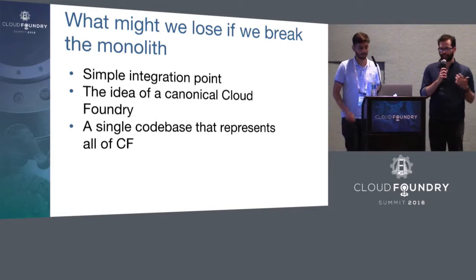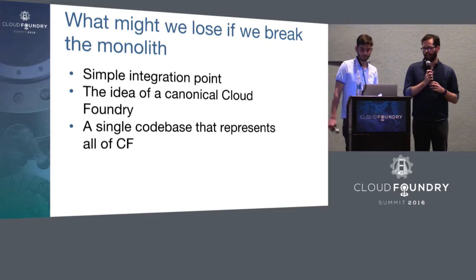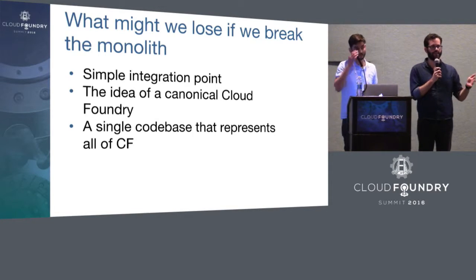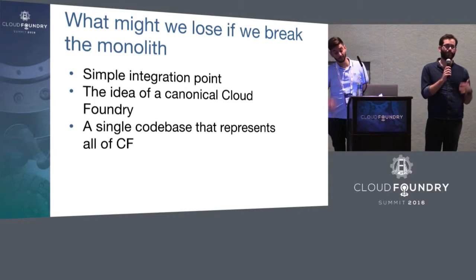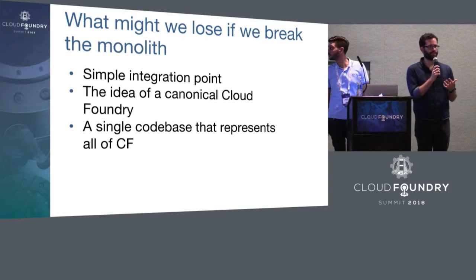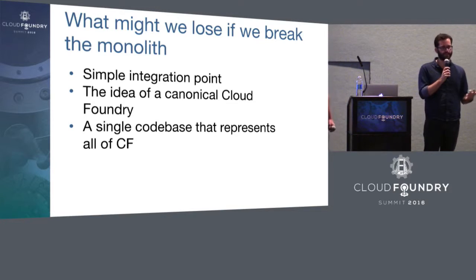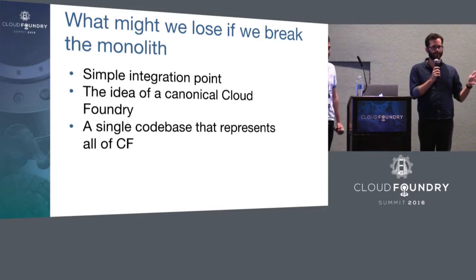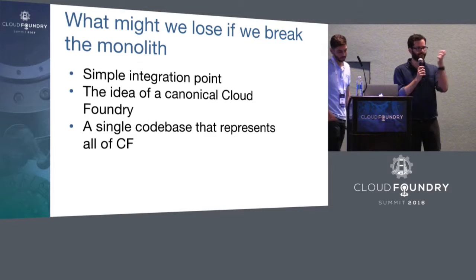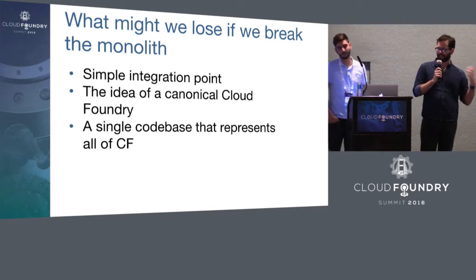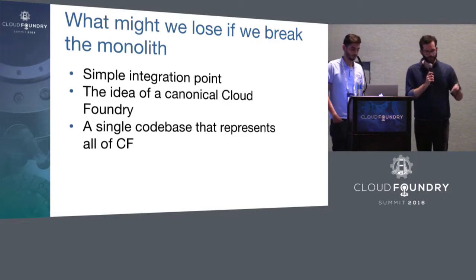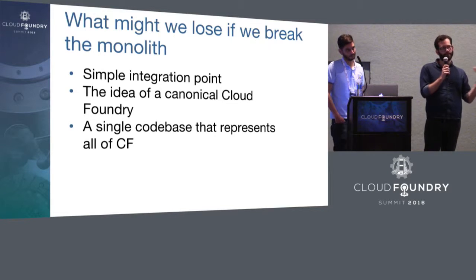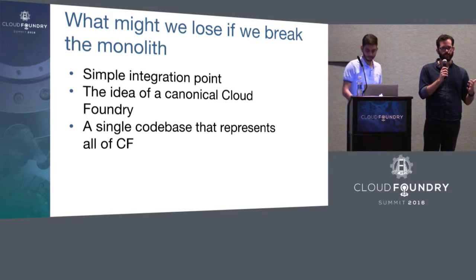There are some nice things about having a monolithic code base that we want to try not to lose. We might lose the idea of a single integration point — something nice about pointing to a single pipeline and saying yes it works or no it doesn't. We might lose the idea of a canonical Cloud Foundry: right now I can say go download CF release 235 and we're all talking about the same thing. But if we break CF release apart, we have to refer to a collection of releases and various versions. And we lose the single code base — currently I can clone CF release and have essentially all of Cloud Foundry. If we break it up, we need to know how to glue them back together.